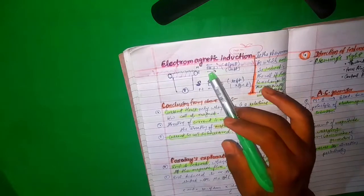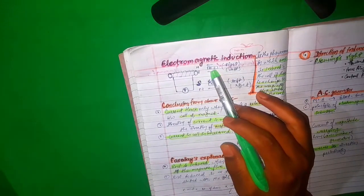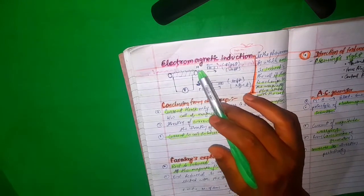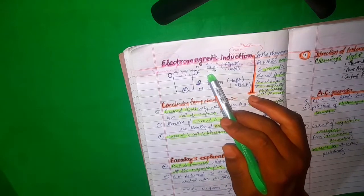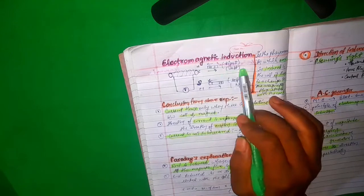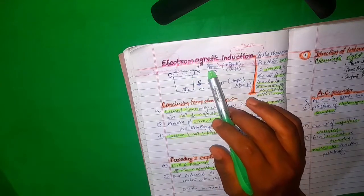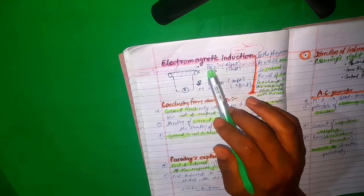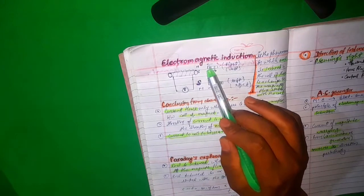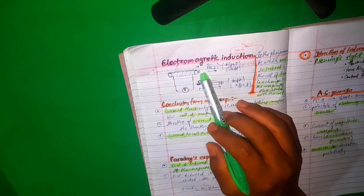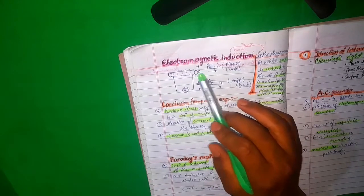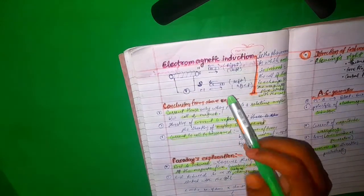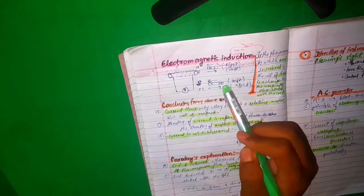When the magnet is pulled away from the solenoid with north pole facing it, the solenoid must attract it to oppose the cause. To attract the north pole, the near end of the solenoid becomes south pole, and the galvanometer deflects to the left.